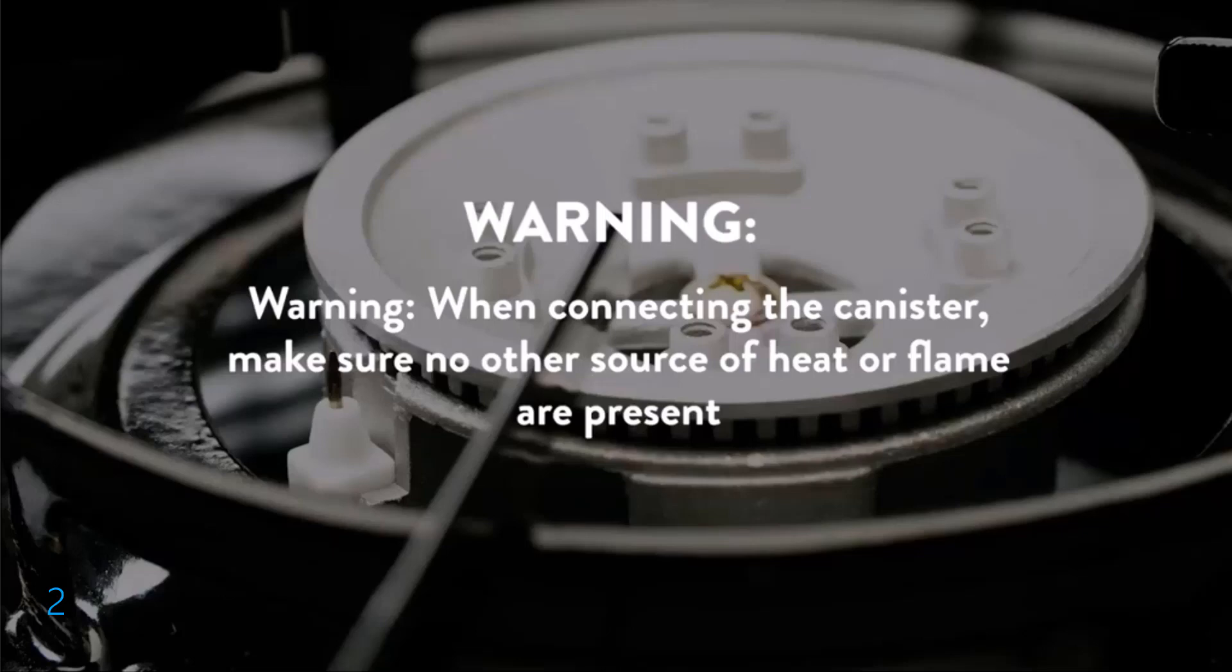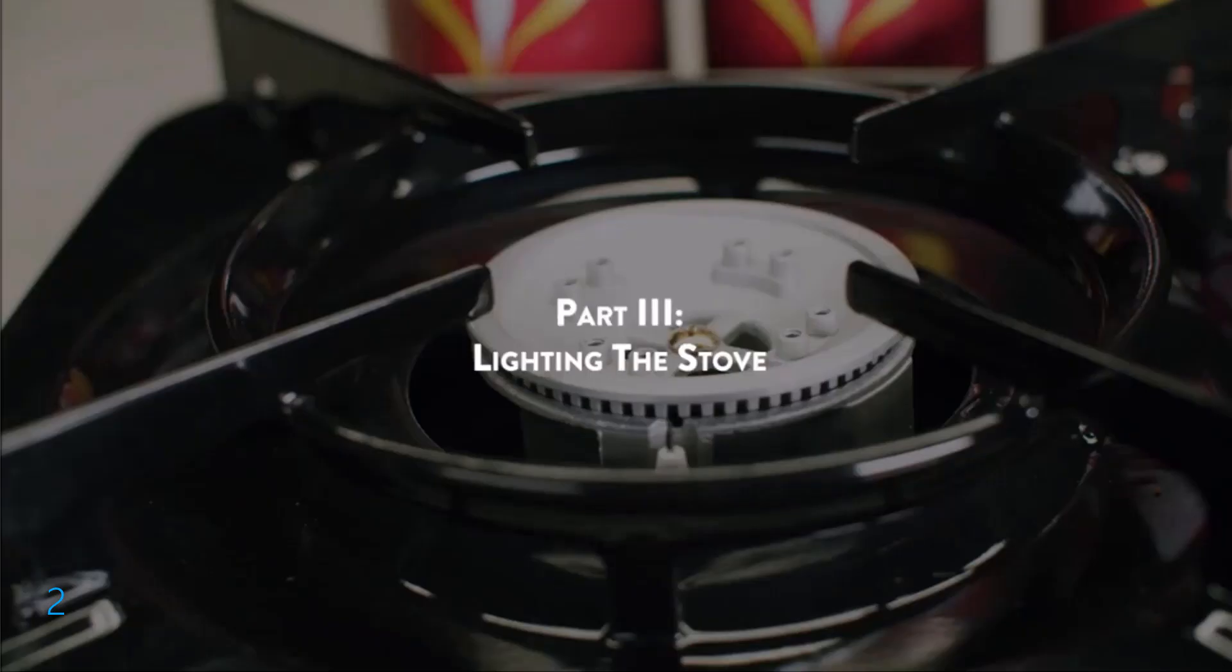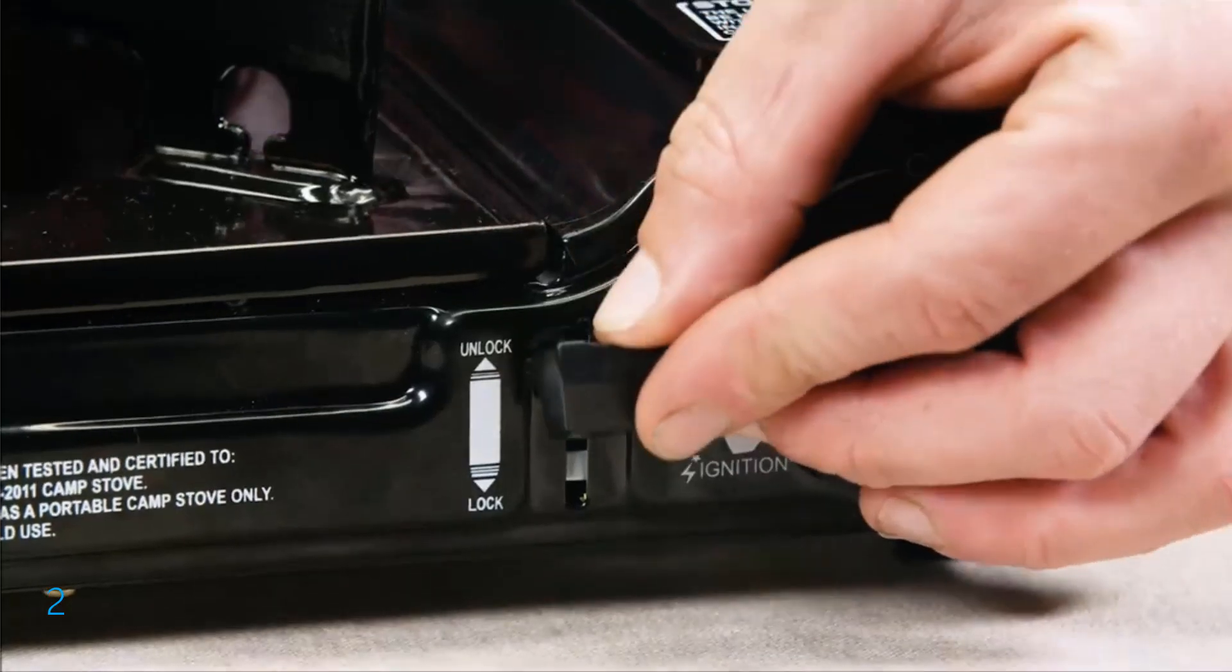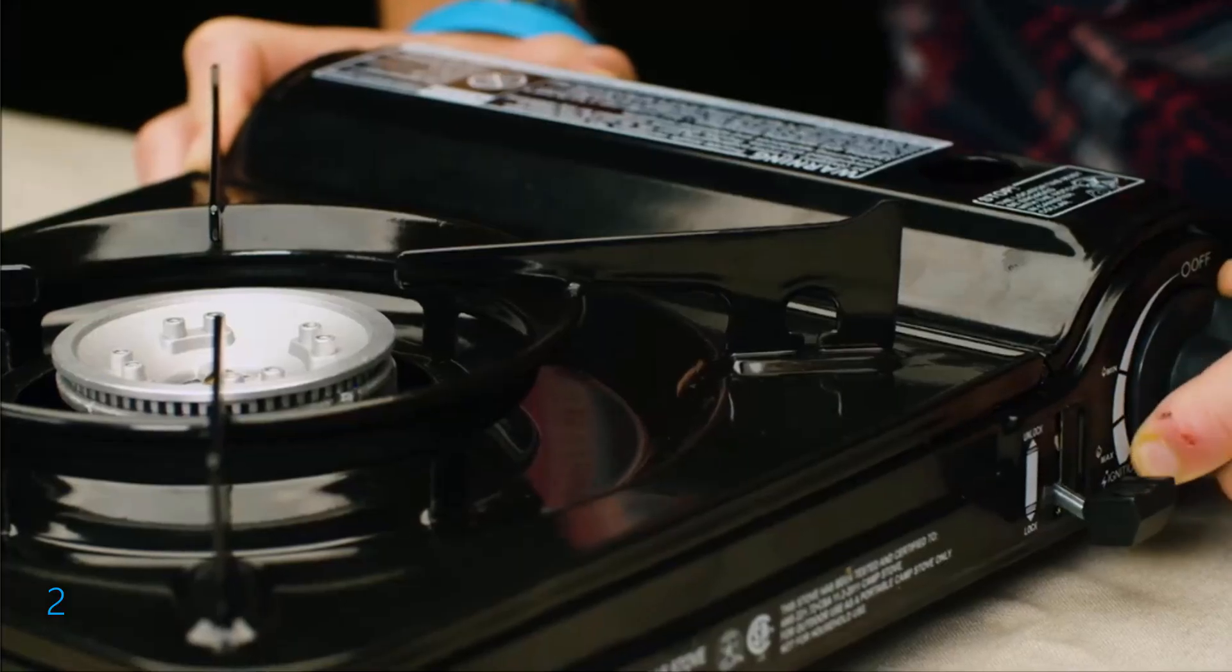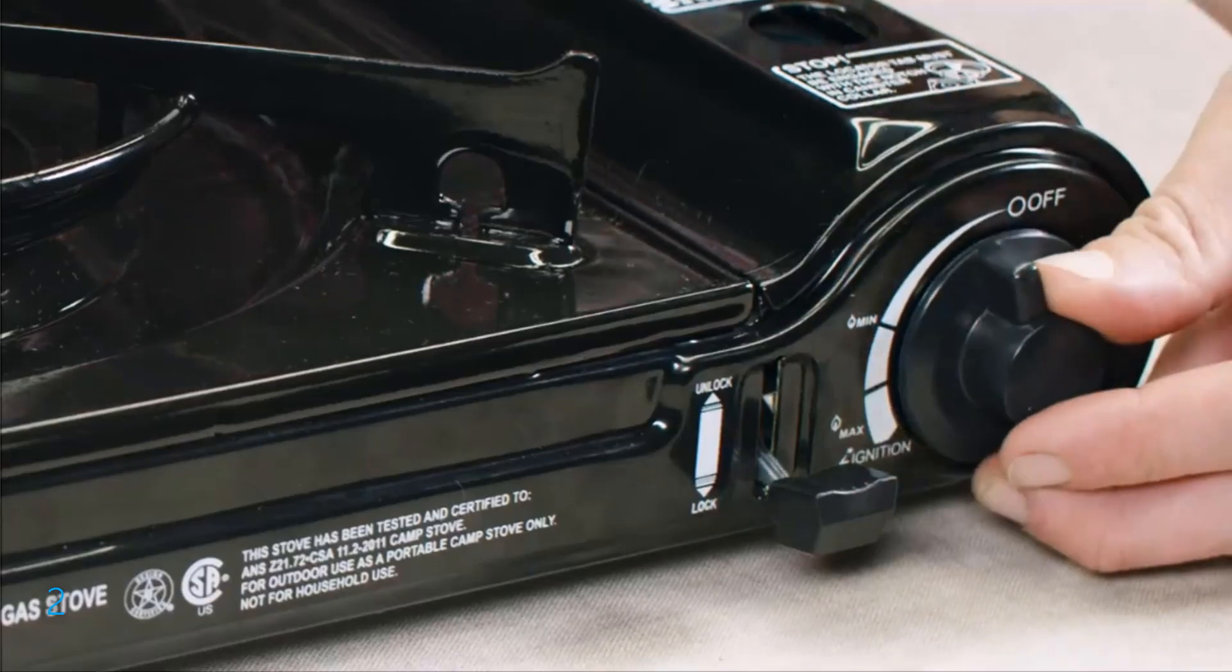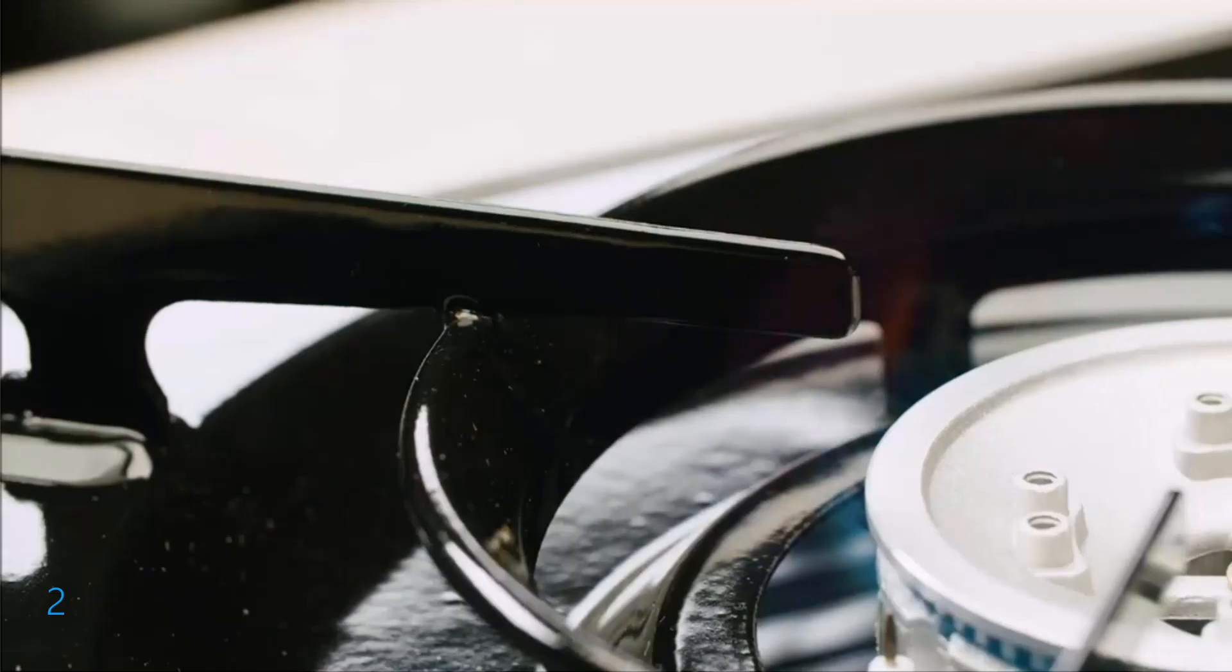Warning: When connecting the canister, make sure no other source of heat or flame are present. Part 3: Lighting the Stove. Turn the control knob counterclockwise until you hear a click, which indicates that a spark is being produced. Adjust the flame to the desired heat level with the control knob.